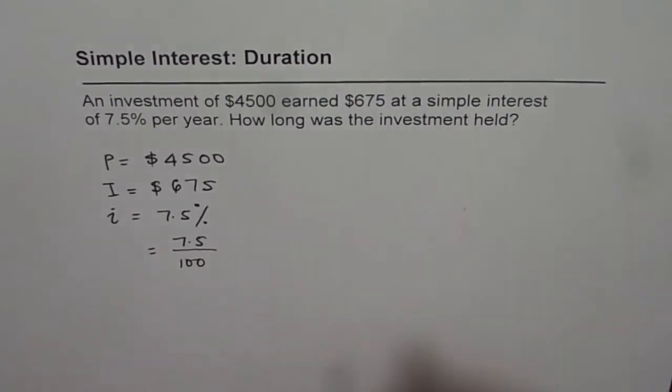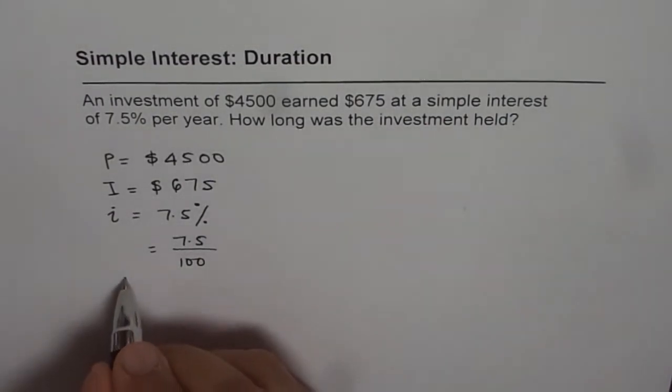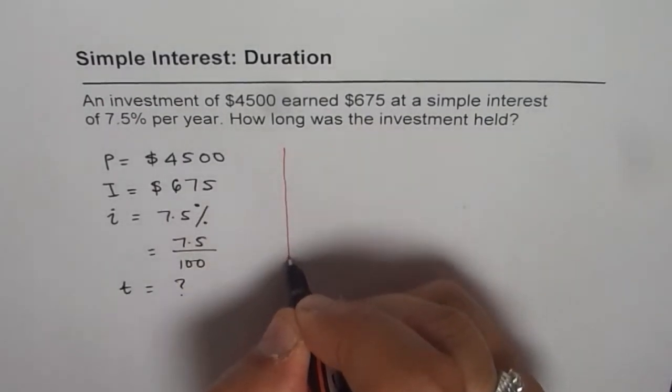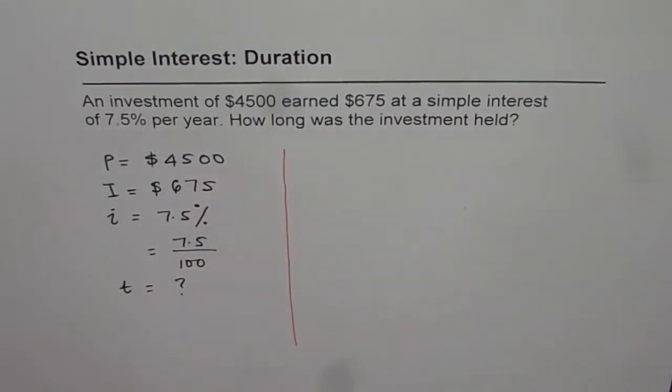And we need to find the duration, time during which this interest was earned. Now, as you know, interest earned is equal to P times r times t.